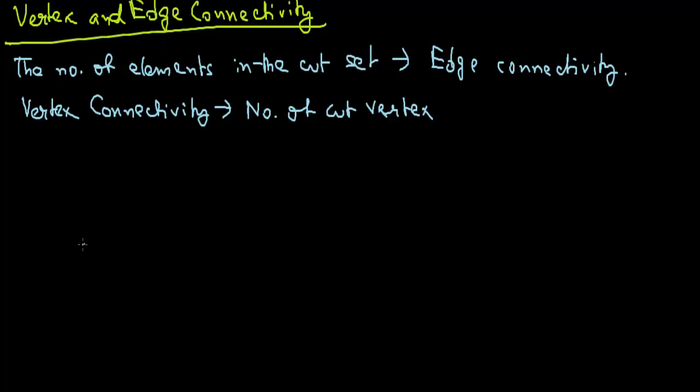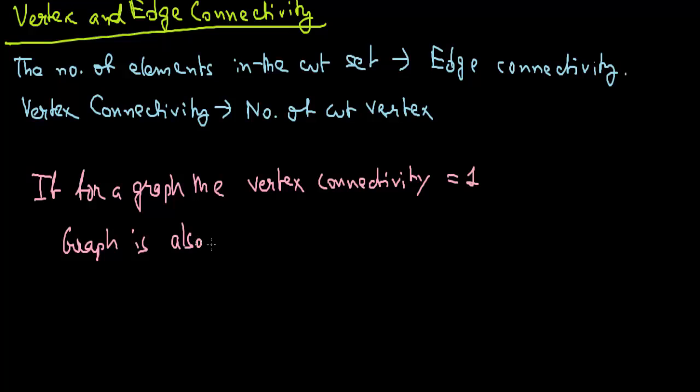So if for a graph the vertex connectivity equals to 1, then the graph is also known as separable graph.